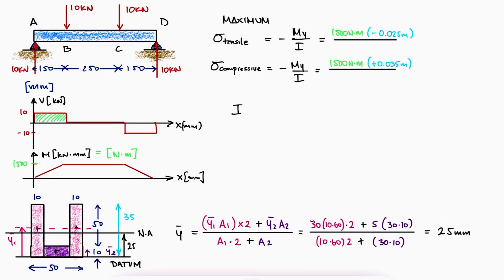To find the second moment of area I, we will add the second moment of area of each individual rectangle. And since in this case, the centroid of each rectangle is on a parallel axis to the neutral axis, we'll use the parallel axis theorem.